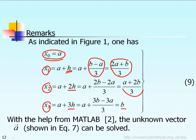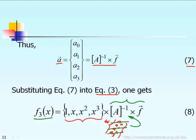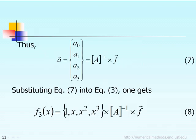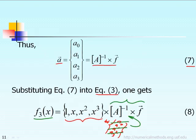Since we know x0, x1, x2, x3, we can use MATLAB software to help us solve equation 7 — specifically to compute A-inverse times F, inverting the 4×4 matrix. Once we use MATLAB to solve for A-inverse, we can solve for the unknown coefficients A0, A1, A2, A3, since those equal A-inverse times F. Once we know A0, A1, A2, A3 we can define the cubic polynomial function F3 of X, and the problem is done.